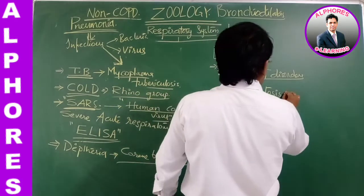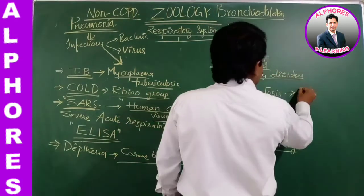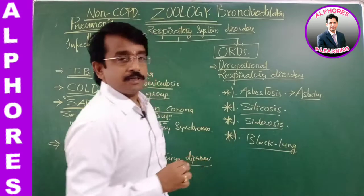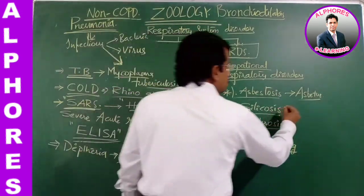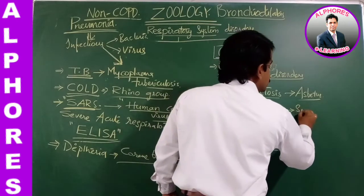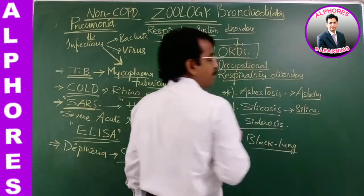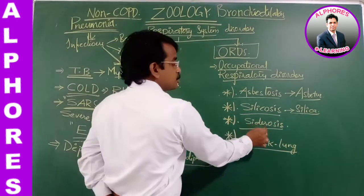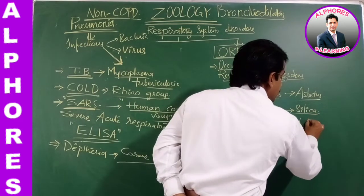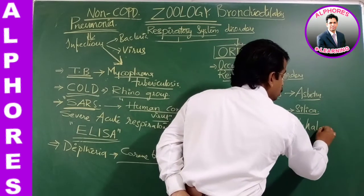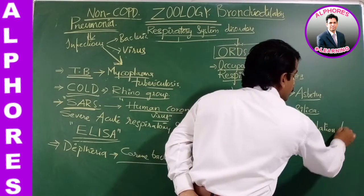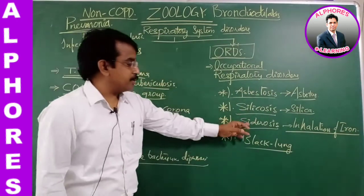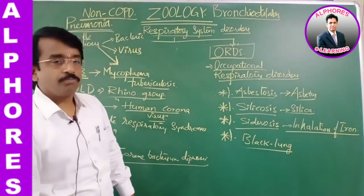Asbestosis occurs in laborers working in asbestos industries who are exposed to asbestos particles. Workers in different industries may be exposed to silica particles, causing silicosis. Siderosis is caused by the inhalation of iron particles.